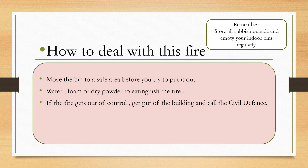How do you deal with a refuse fire? If it's possible, move the bin to a safe area before you try to put it out. Use water, foam, or dry powder to extinguish the fire. Aim at the base, not the flames. If the fire gets out of control, get out of the building and call the civil defense.